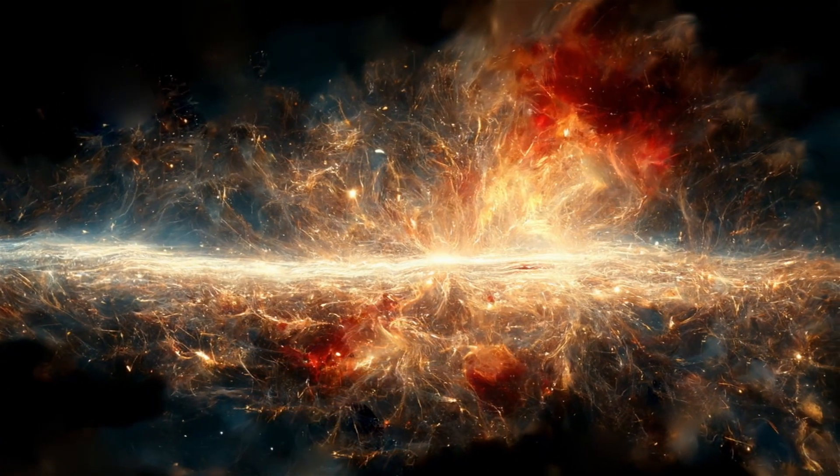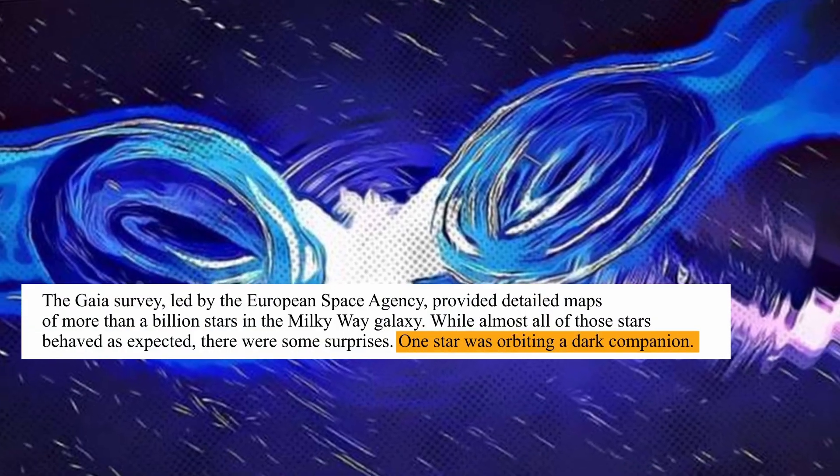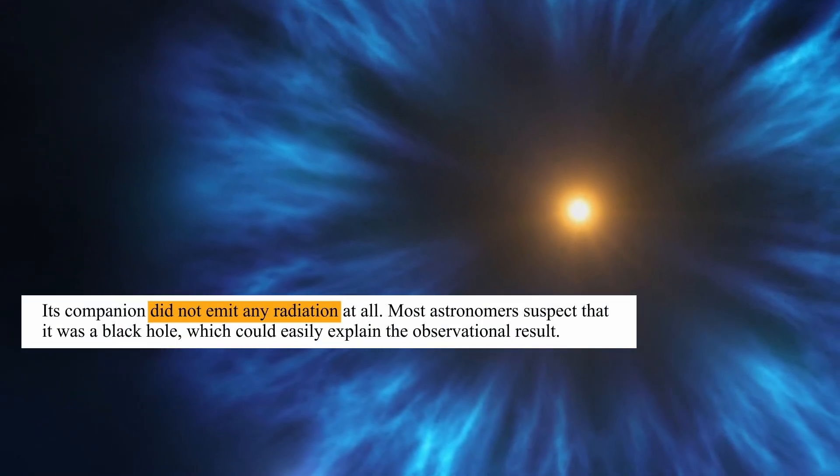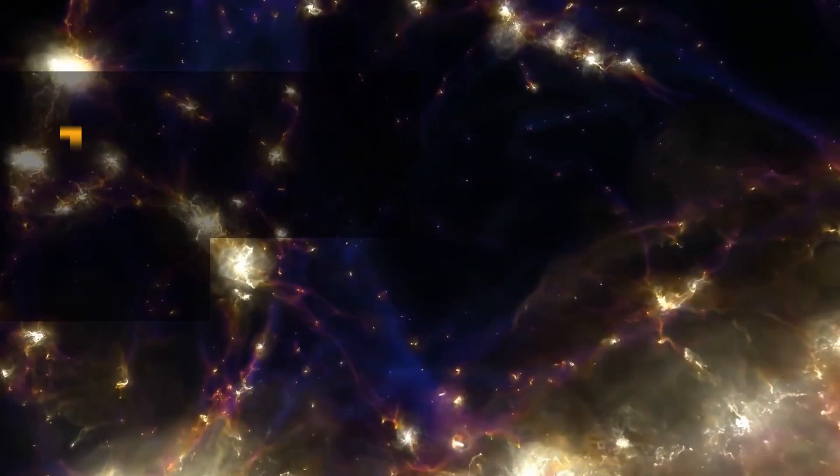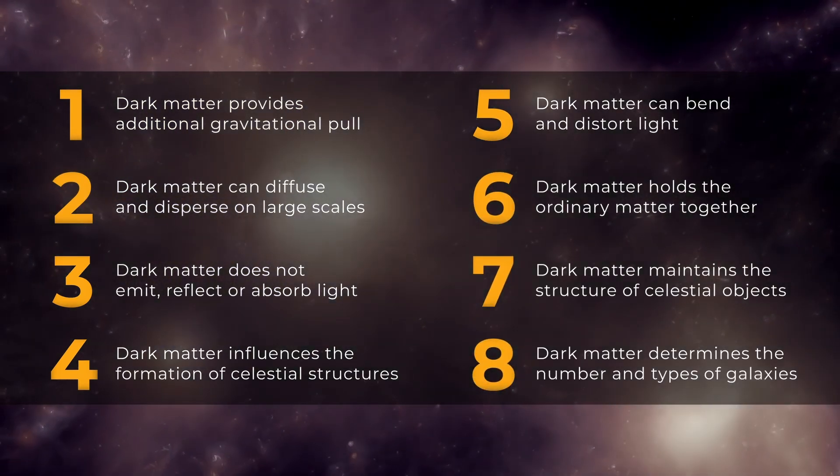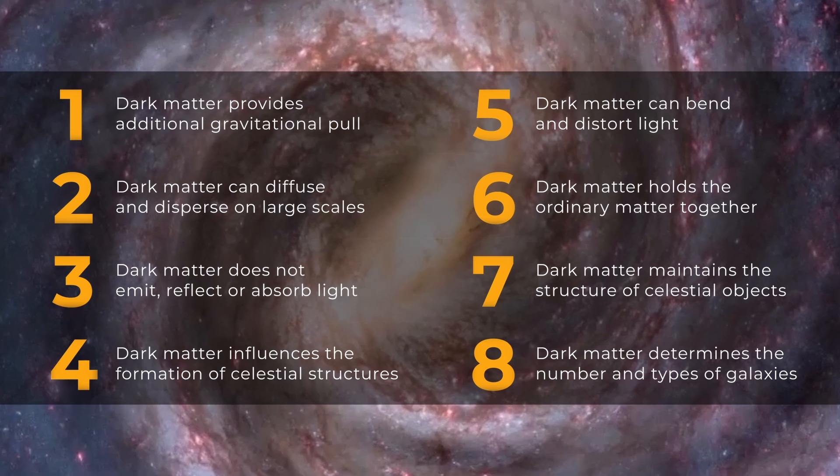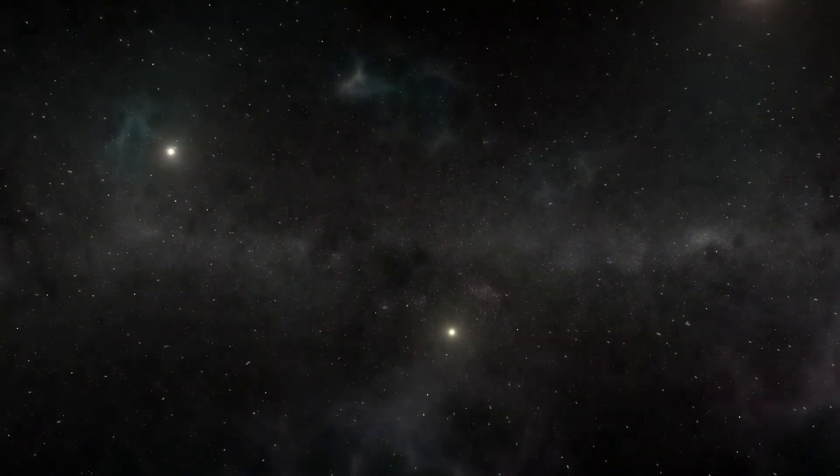Yet one question still lingers. Could dark matter have given birth to something extraordinary, like the dark matter star? Although we don't have concrete evidence of a dark matter star, let's imagine how dark matter could have manifested such an entity. We know that stars are mostly made of ordinary matter. We know that the cosmic web is also composed of dark matter filaments and galaxy clusters. Within the dark matter halos that surround galaxies, there could be dense regions of concentrated dark matter.